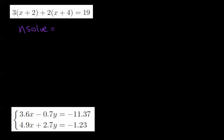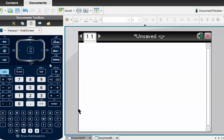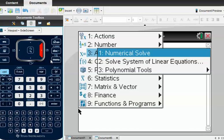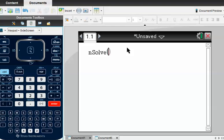So three bracket x plus two plus two bracket x plus four equals 19. So what does x equal? So if we go to our calculator, then go to menu, down to algebra, and across, and it's the first one, numerical solve.